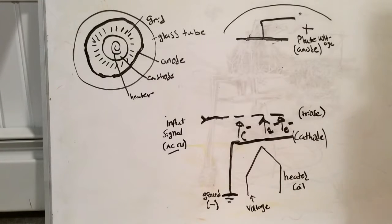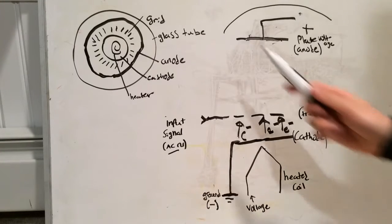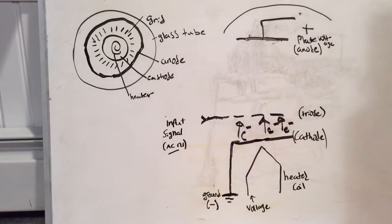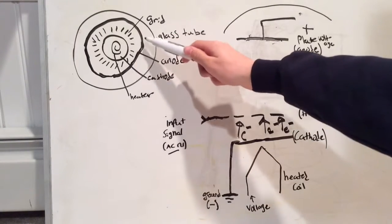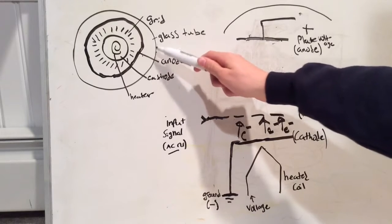In this video we're going to talk about how the tube works. Here's a bird's eye view of the tube. On the inside you have your heater, cathode, grid, anode, and the glass tube.